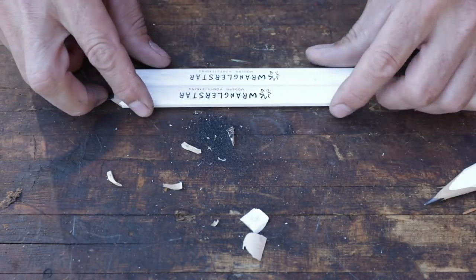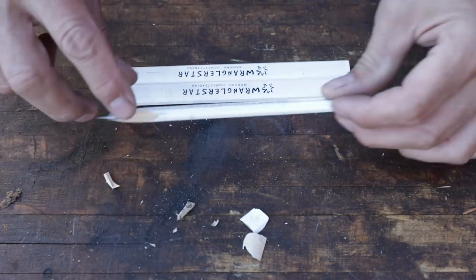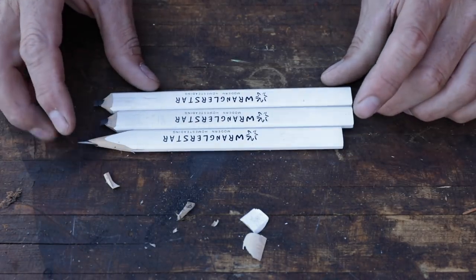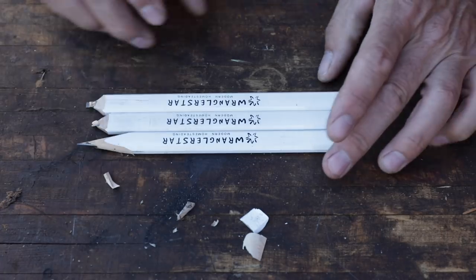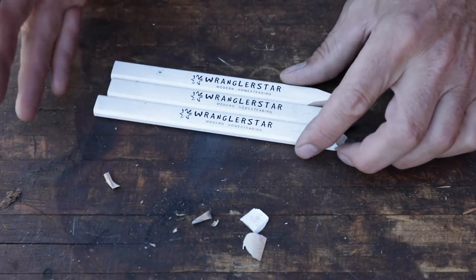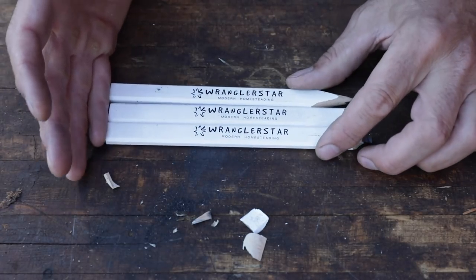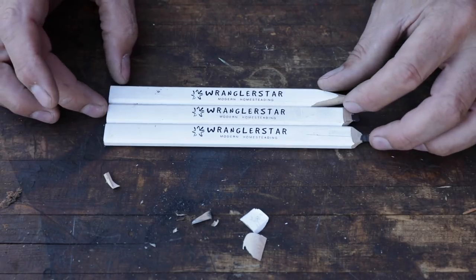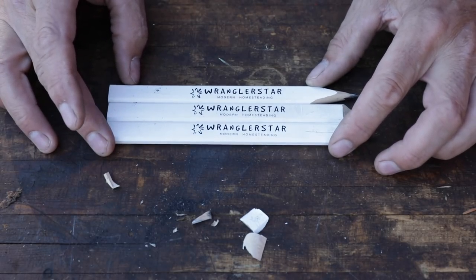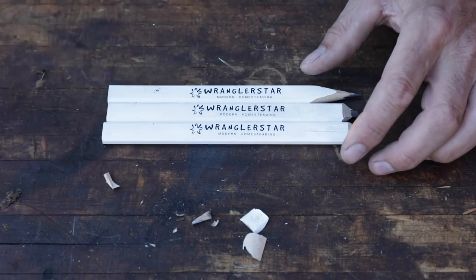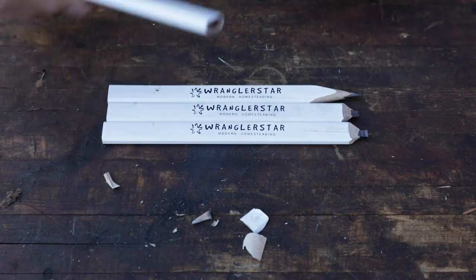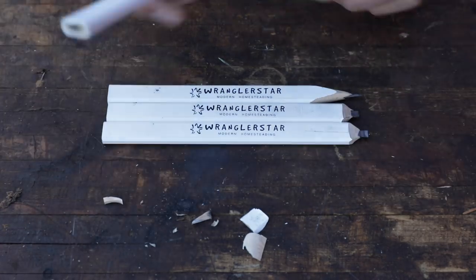So in wrapping up, a lot of folks ask, how do we get a Wrangler Star pencil? Well, we've never sold the pencils. Mrs. W and I have them on us, and the only way to get one is if you meet us. So if you meet us in the store or somewhere in town, ask me because I usually have one on me, and I'll be happy to give you one. That's how you get your Wrangler Star pencils.